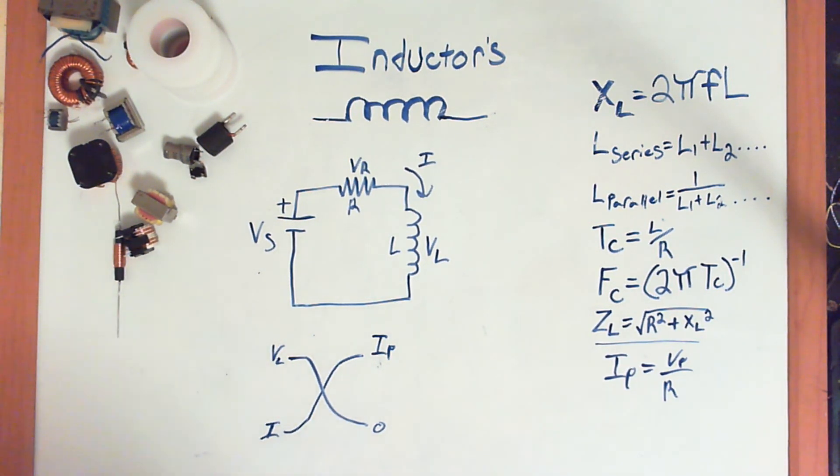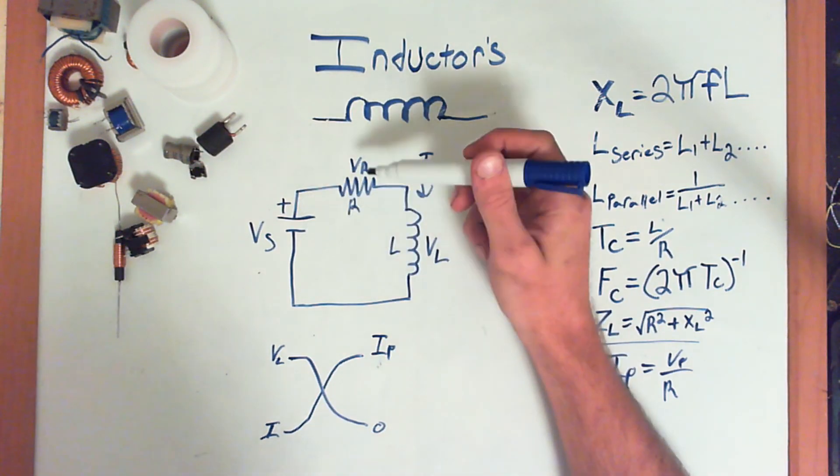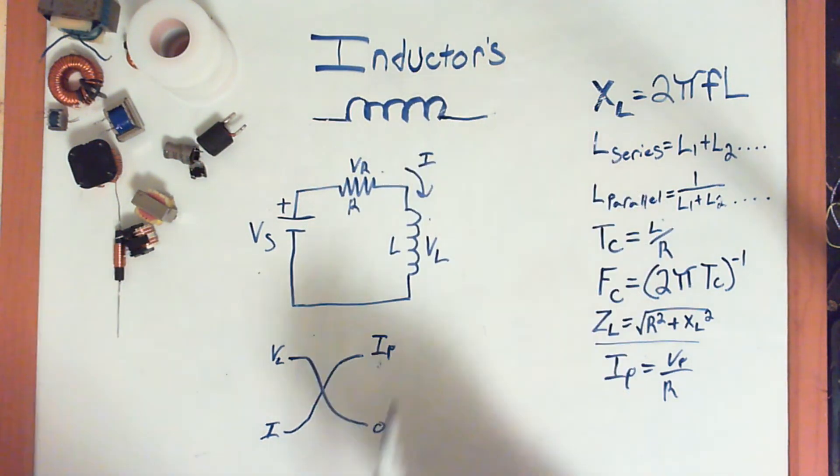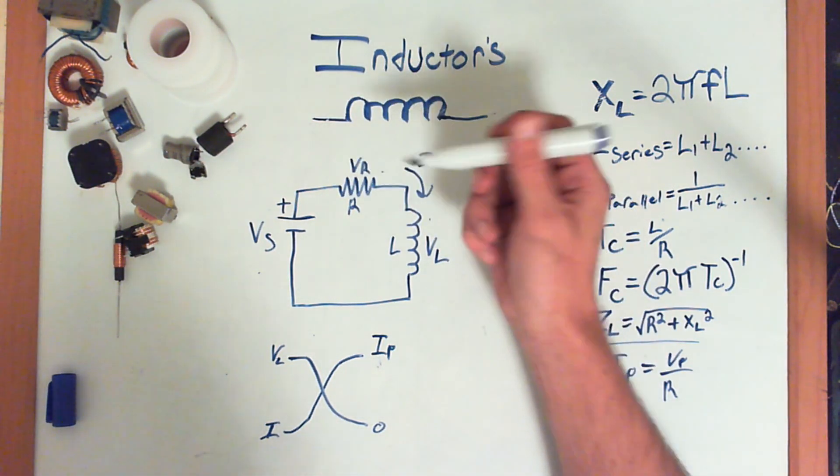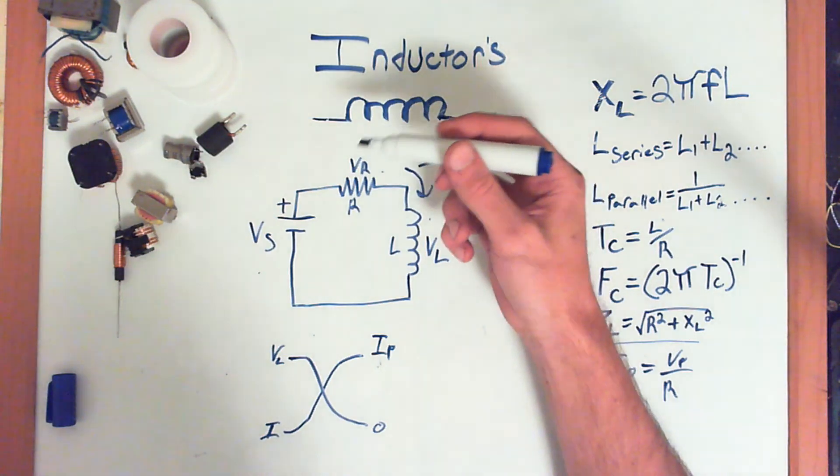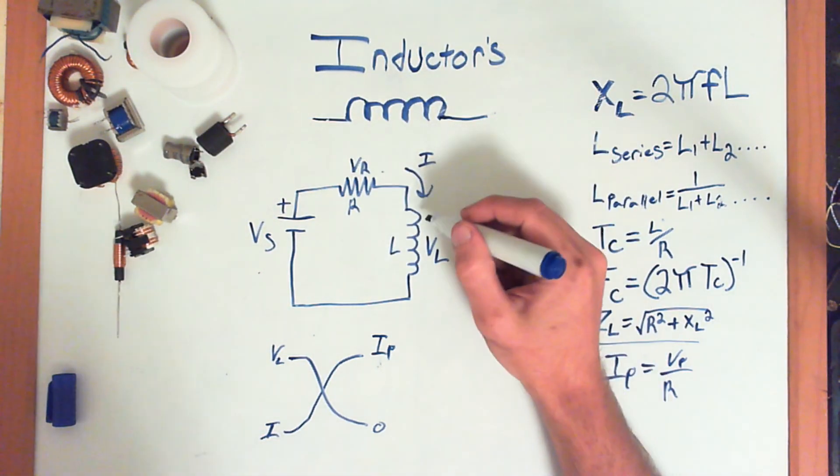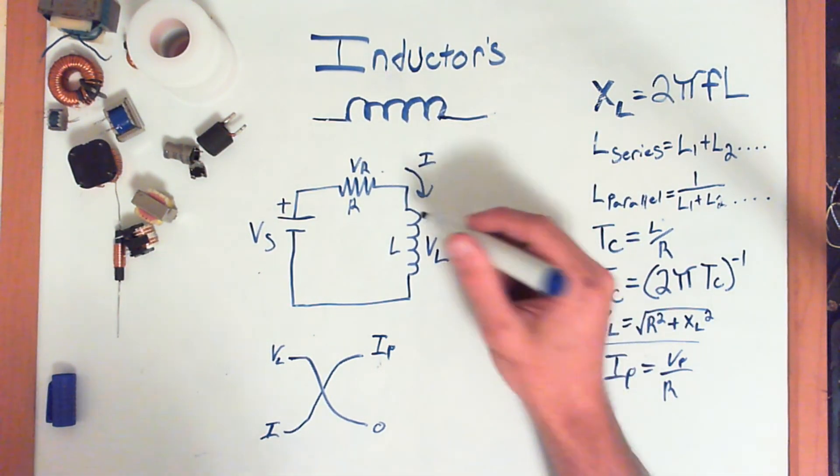What we got here is a resistor. Well, we got a battery, a resistor, and an inductor. And a DC circuit, what's going to happen is, well, hang on. Alright, an inductor. Let's go into a little more theory on them.